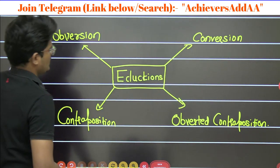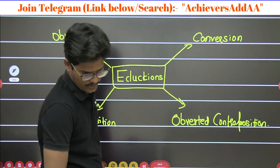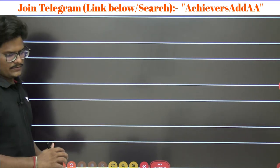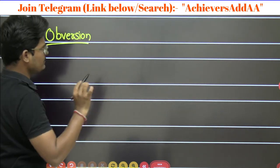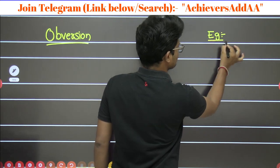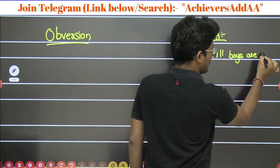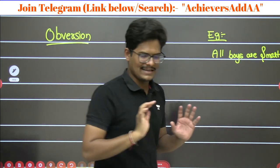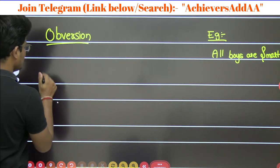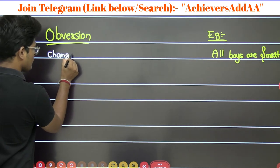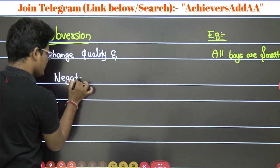So, aversion, conversion, contraposition, and averted contraposition — let me tell you the simple way. I will knock out all four things one by one. What is the first one, obversion? I will take one standard example for all. All boys are smart. This is the example I am going to use for all to explain. The obversion rule: change the quality of the proposition and negate the predicate.